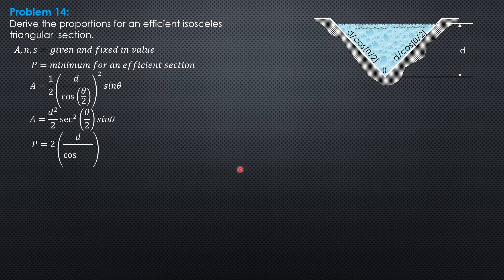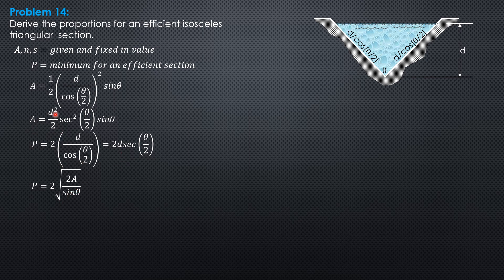The perimeter is 2 times d over cos(θ/2), or 2d·sec(θ/2). From the area equation, 2A/sin(θ) = d²·sec²(θ/2). Extracting the square root, d·sec(θ/2) = √(2A/sin(θ)). Substituting, the perimeter equals 2·√(2A/sin(θ)). Since A is constant, we can rewrite this as perimeter = 2√(2A) · sin(θ)^(−1/2).